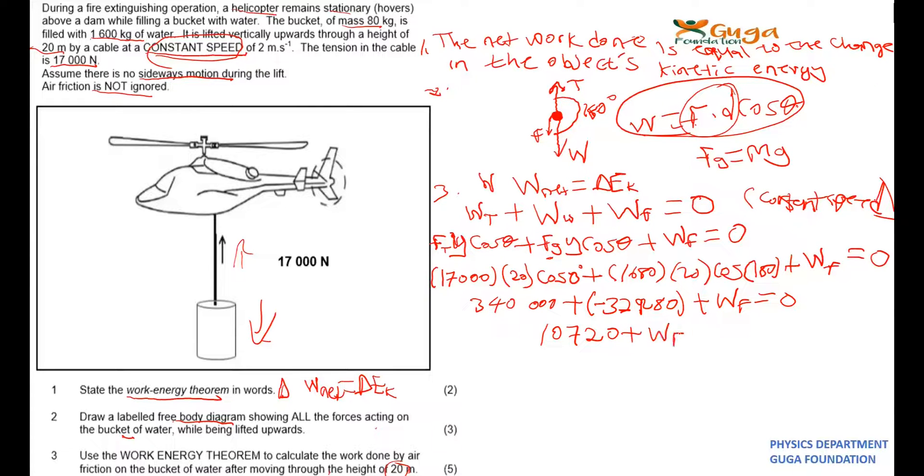Work done by friction is zero. Because the work done by friction, you know this friction is opposing the motion, you should have a negative work done. Your friction is pushing the block down, opposing the motion of the total motion.